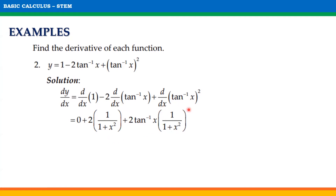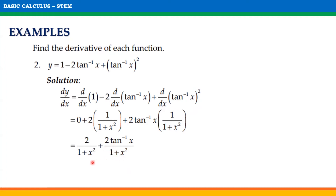Moreover, using chain rule, we will get 2·arctan(x) · (1 / (1 + x²)). Simplifying it, we will get -2 / (1 + x²) + 2·arctan(x) / (1 + x²). Since we have the same denominators, we will add the numerators, giving us (2 + 2·arctan(x)) / (1 + x²).